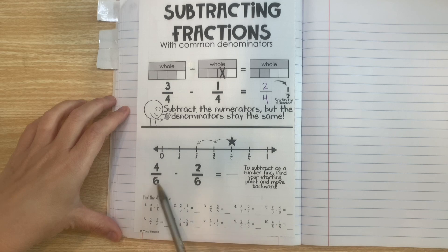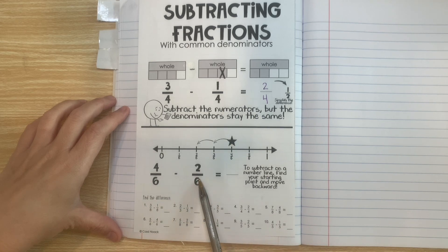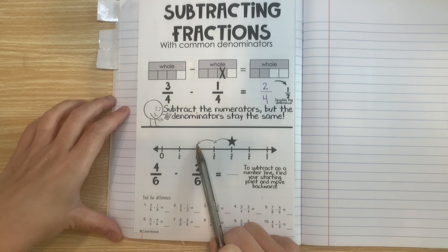So we're going to start at 4 sixths. So right here is where we start. Now since we're going to take away 2 sixths we have to hop backwards two times. Wherever we land is our difference.